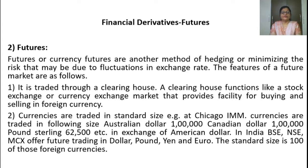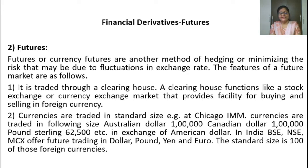Second, currencies are traded in a standard size. For example, at Chicago International Money Market, currencies are traded in the following sizes: Australian Dollar 1 lakh, Canadian Dollar 1 lakh, Pound Sterling 62,500, etc., in exchange of American Dollar. In India, BSE, NSE, and MCX offer future trading in Dollar, Pound, Yen, and Euro. The standard size is fixed for those foreign currencies.